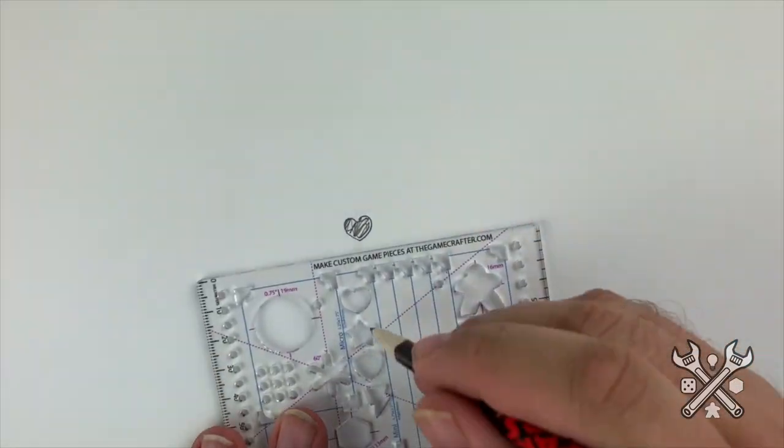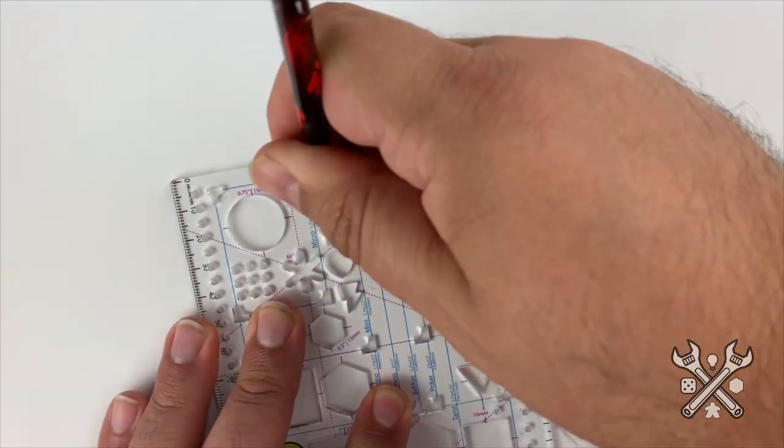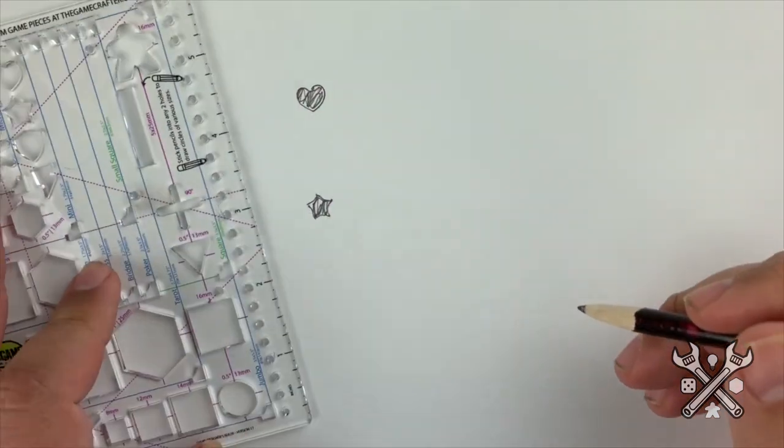There are stencils for common icon types such as hit points, stamina, defense, and victory points.